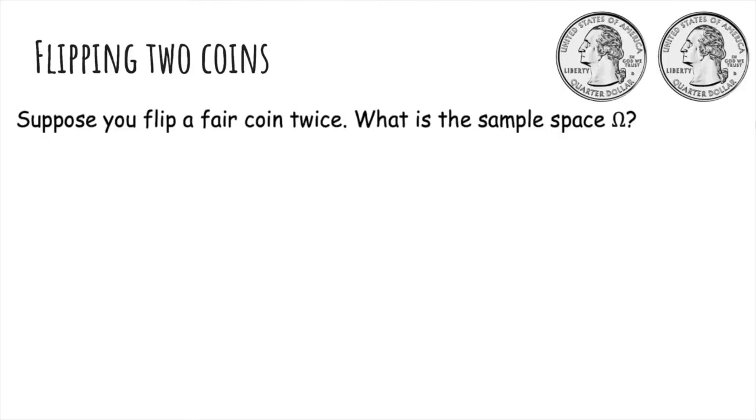So suppose you flip a fair coin twice. What's the sample space omega? Well, it's just the set of four outcomes: heads-heads, heads-tails, tails-heads, and tails-tails.